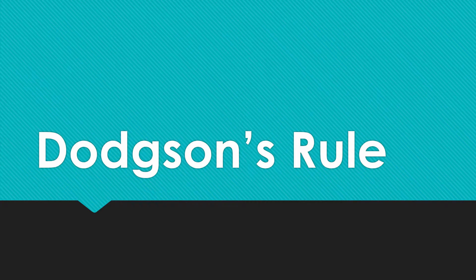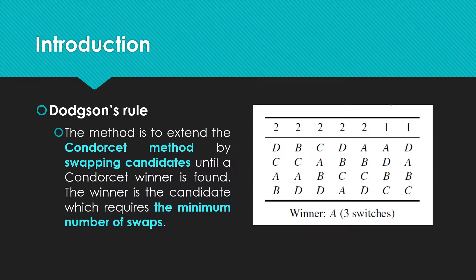Hello everyone. Today I will introduce Dawson Ruh. An alternative is an option winner if it can be made a conducted winner by interchanging as few agency alternatives in the individual rankings as possible. For example,